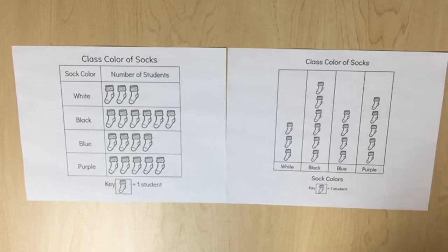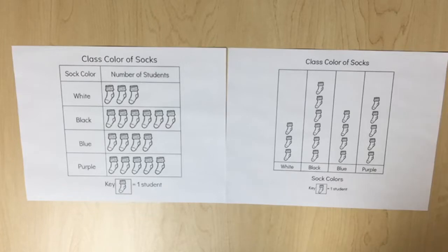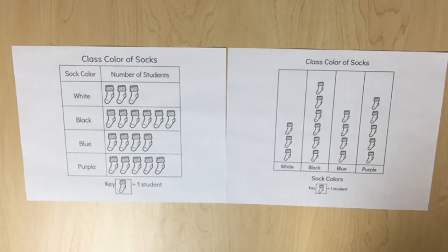In previous grades, students participated in class surveys, often using yes-no questions, and used the data to create picture and bar type graphs. In second grade, students organize a collection of data with up to four categories using bar graphs and pictographs. Data may be represented in intervals of 1, 2, 5, or 10.